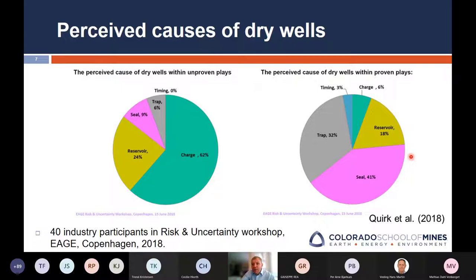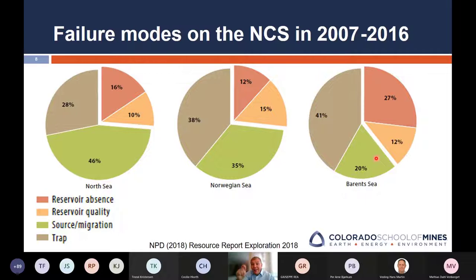That's ExxonMobil. This is more of a global industry look. I mentioned this workshop on risk and uncertainty we had in Copenhagen a few years ago. People were asked about the perceived causes of dry wells in unproven plays and in proven plays. Basically the same pattern: in frontier plays, people think charge is most often a failure mode, then reservoir, then seal and trap. In proven plays, people think it's seal and trap — closure is probably the more likely failure mode. That's consistent with ExxonMobil's global experience.